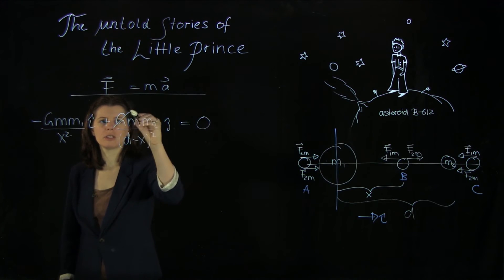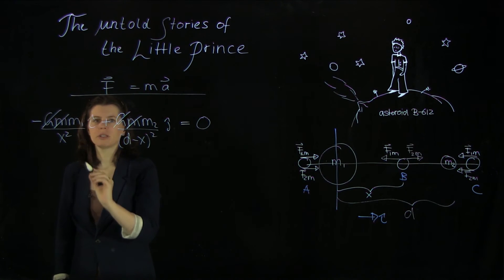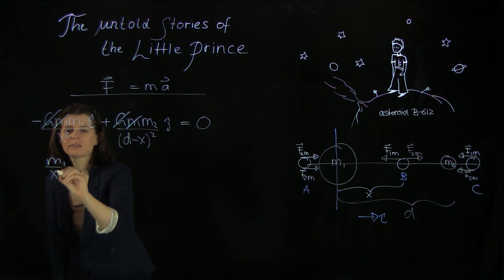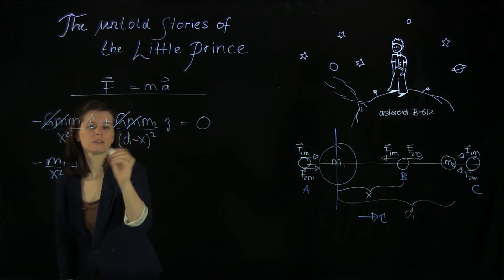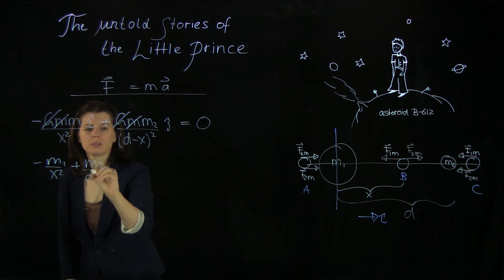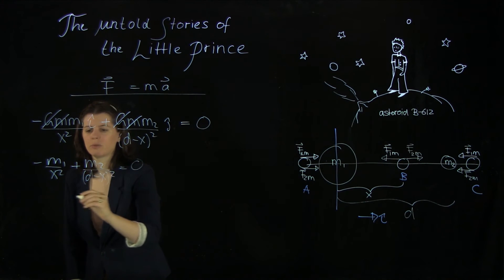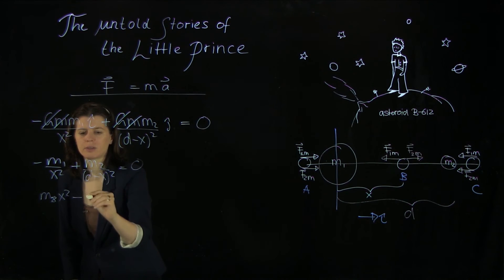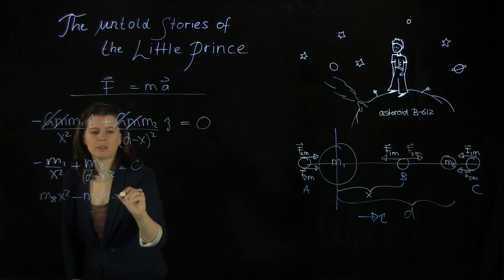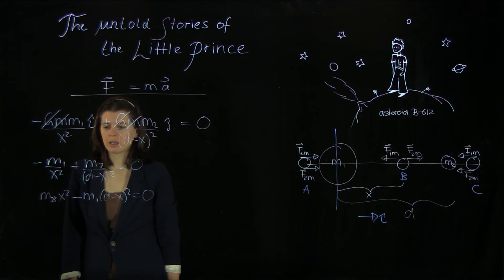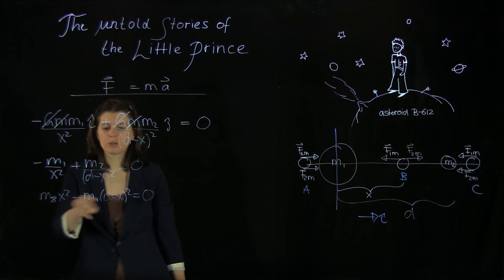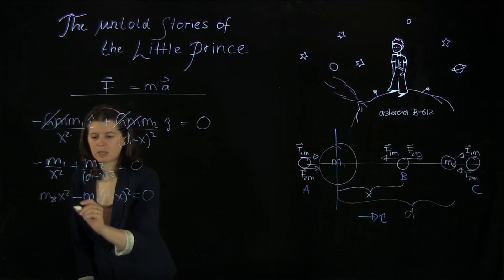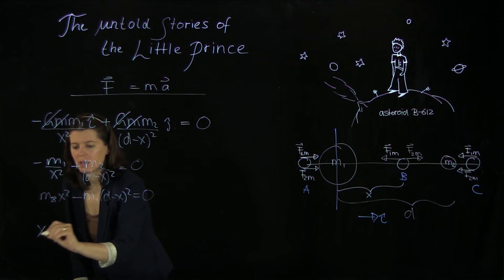And in the first step, we see that actually G and m will fall out here. And then we're left with m1 over x squared plus m2 over d minus x squared. And we can write that as m2 x squared minus m1 over d minus x squared. And what you see here is that this will turn into a quadratic equation. And if we do a few steps of arithmetic and then write down the general solution to this quadratic equation, we will find this here.